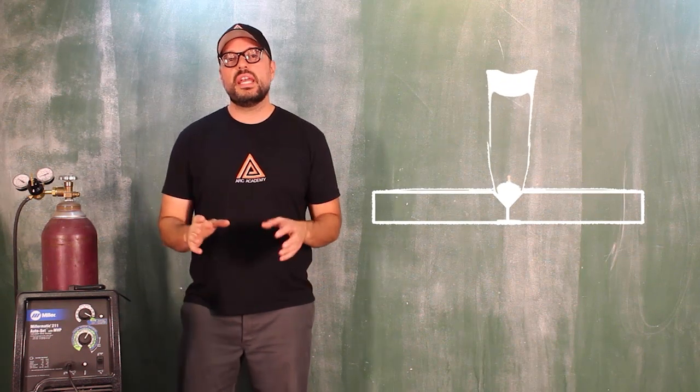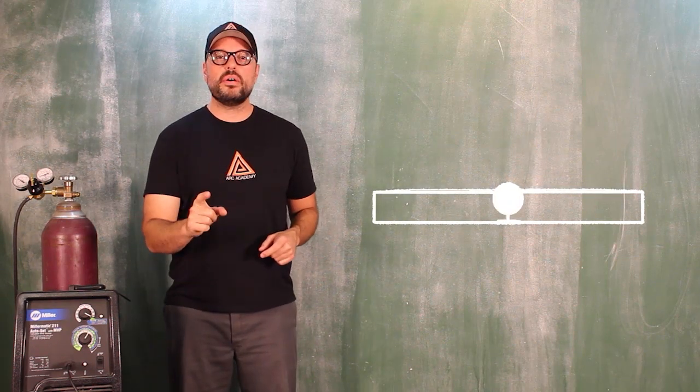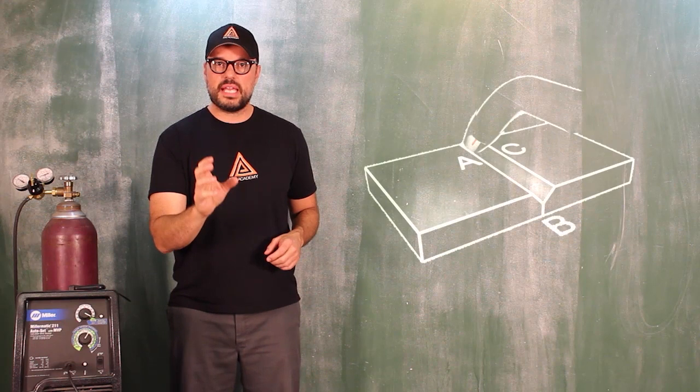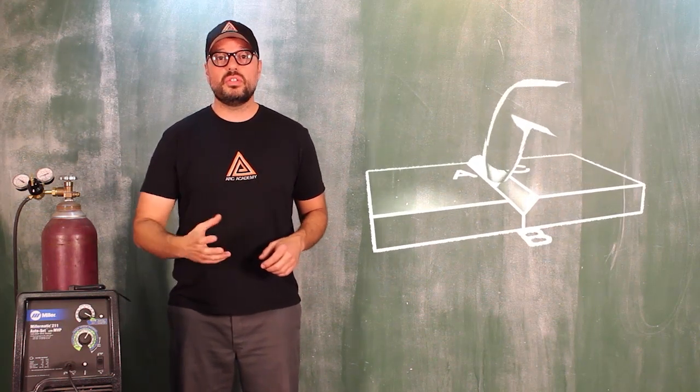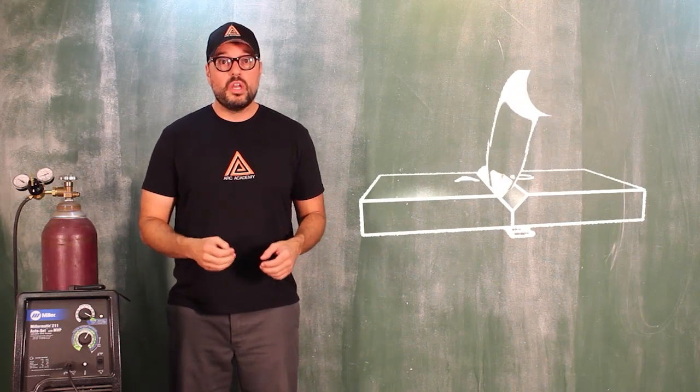Now what you have to understand is you're trying to keep that puddle the exact same size as you move it through the weld zone, breaking the A and C edge while you're executing your technique.